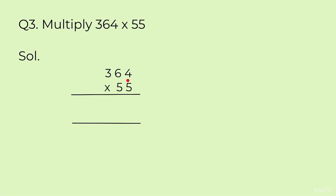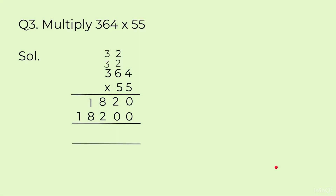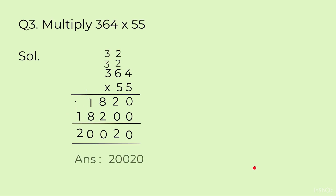Third: 364 × 55. Multiply 5 with 364 first: 5 fours are 20, carry 2, write 0. 5 sixes are 30, plus 2 is 32, carry 3, write 2. 5 threes are 15, plus 3 is 18. For the second 5, we add one zero, then copy 1820 because we multiply by 5 again. Adding: 0+0=0, 0+2=2, 8+2=10, carry 1. 8+1=9, plus 1 is 10, carry 1. 1+1=2. Answer is 20,020.